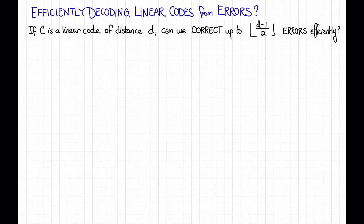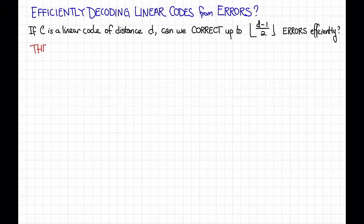So here's the question: if I have an arbitrary linear code C of distance d, is there an algorithm to correct up to floor((d-1)/2) errors efficiently? Note that for some particular codes like the Hamming code the answer might be yes, but the question is whether we can do this in general for any linear code C. Here's the bad news — the answer is probably no.